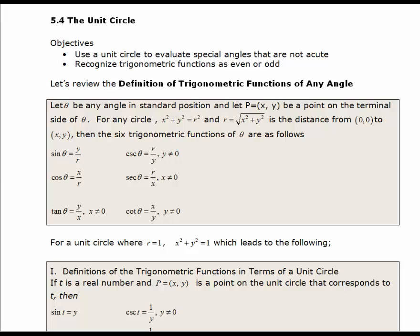Let's first do a refresher on the definition of trigonometric functions of any angle. Theta is any angle in standard position, and the point (x, y) is on the terminal side of theta. We know that in a circle, x squared plus y squared equals r squared, so the radius equals the square root of x squared plus y squared. The six trigonometric functions are: sine of theta is y over r, cosine of theta is x over r, tangent of theta is y over x, and the three reciprocal functions.